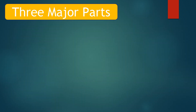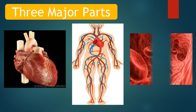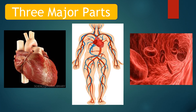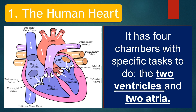There are three major parts of the circulatory system: the heart, the blood vessels, and the blood. First is the heart. The heart is a hollow muscular organ about the size of your fist, which is located in the center of your chest between the lungs. It is the organ that pumps the blood throughout the body. It has four chambers with a specific task to do: the two ventricles and the two atria.